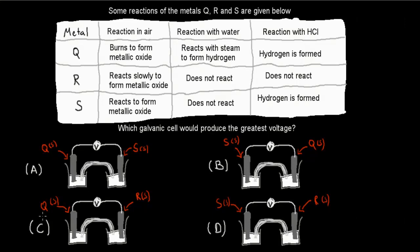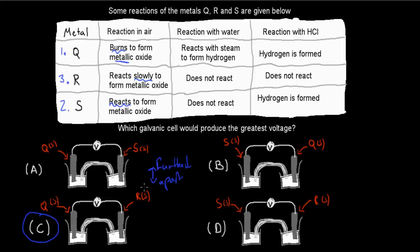The correct answer was C. The highest voltage is produced when the two metals are furthest apart in reactivity. Q burns to form metallic oxide — Q is the most reactive. R reacts slowly — R is the least reactive. S reacts but does not burn — S is in between. Using Q and R together gives the furthest separation on the reactivity series, producing the highest voltage. So the correct answer is Q and R.